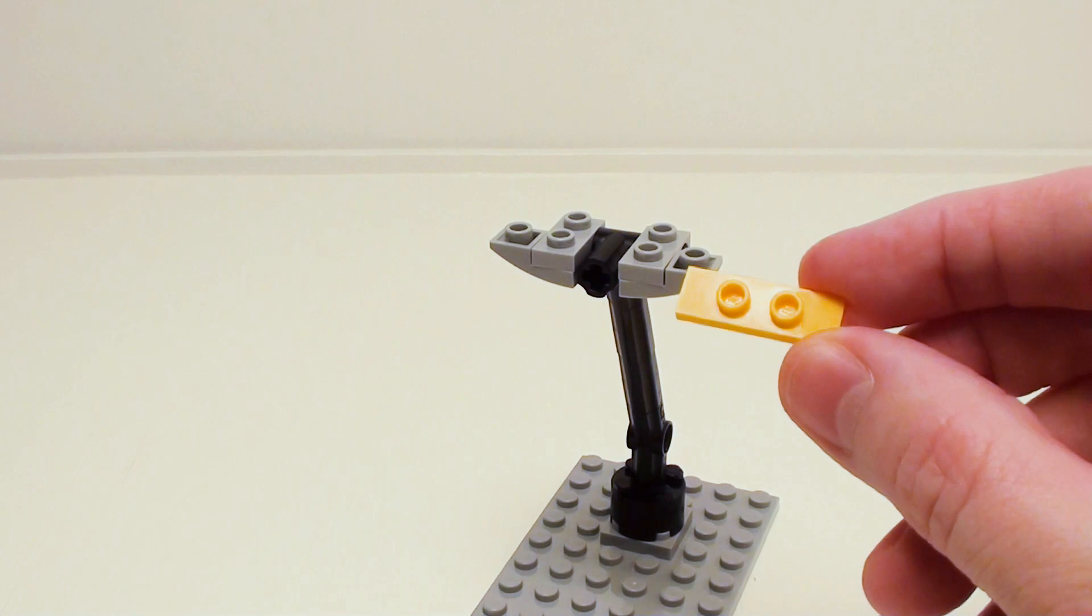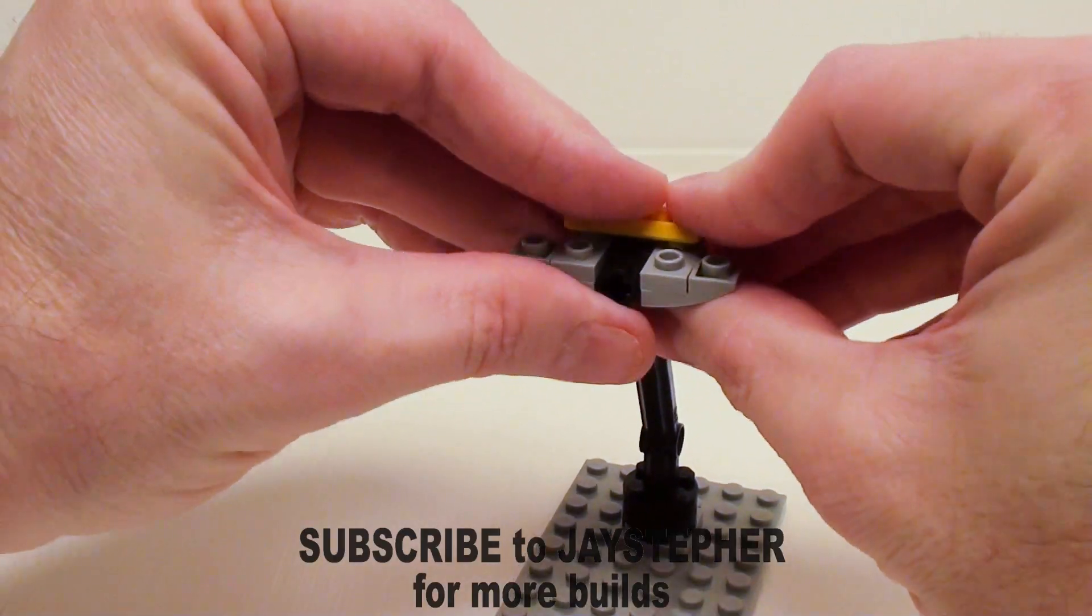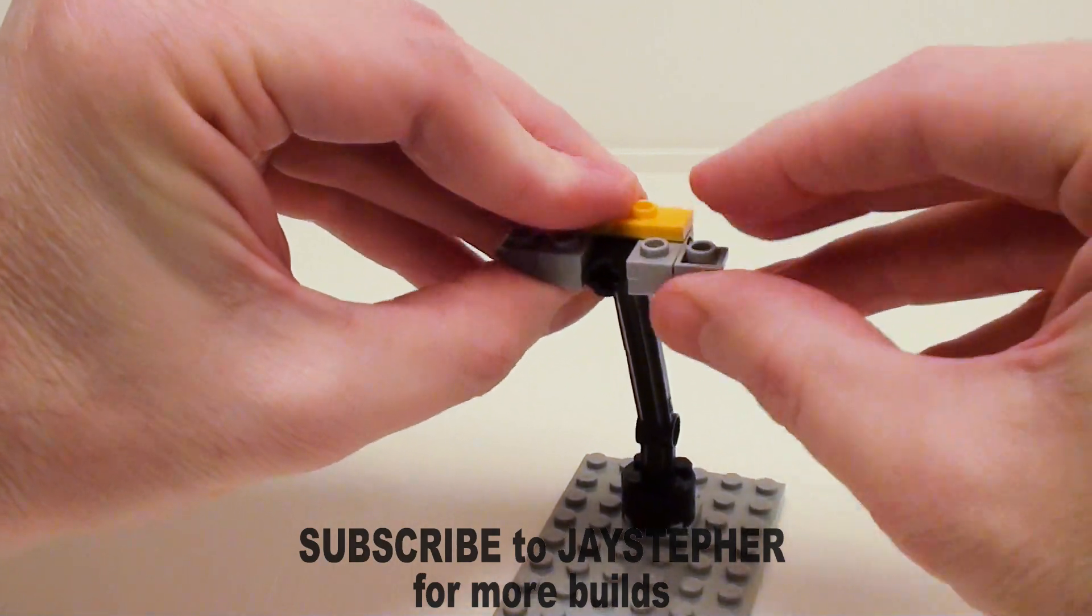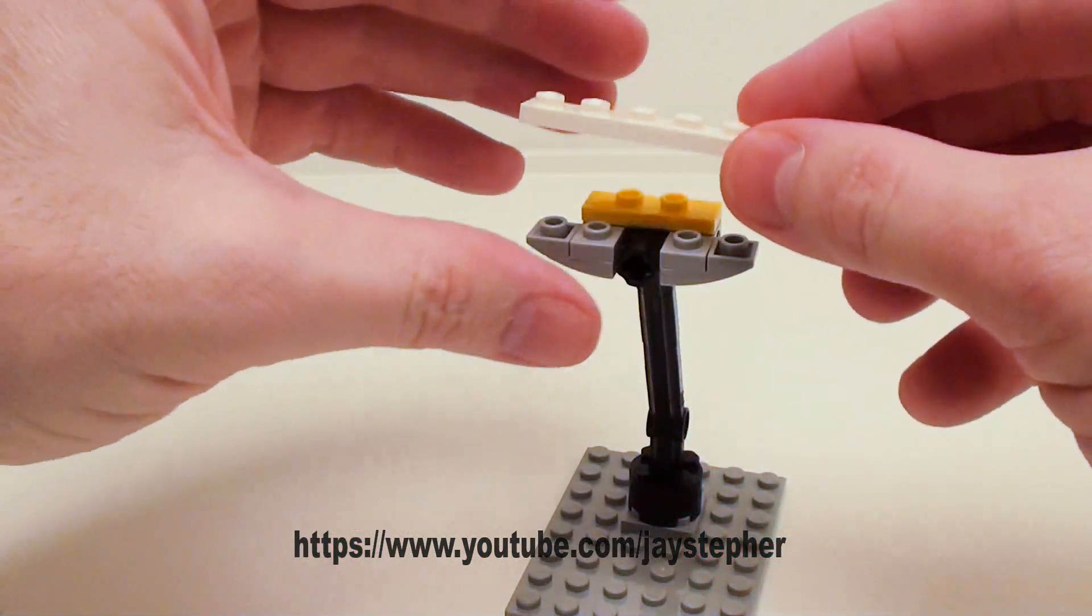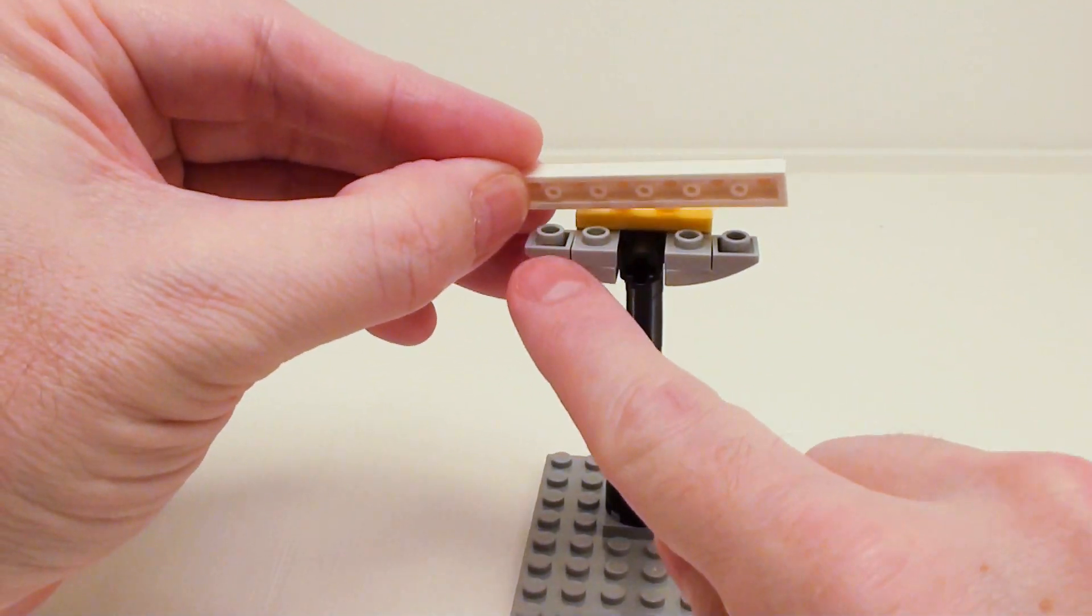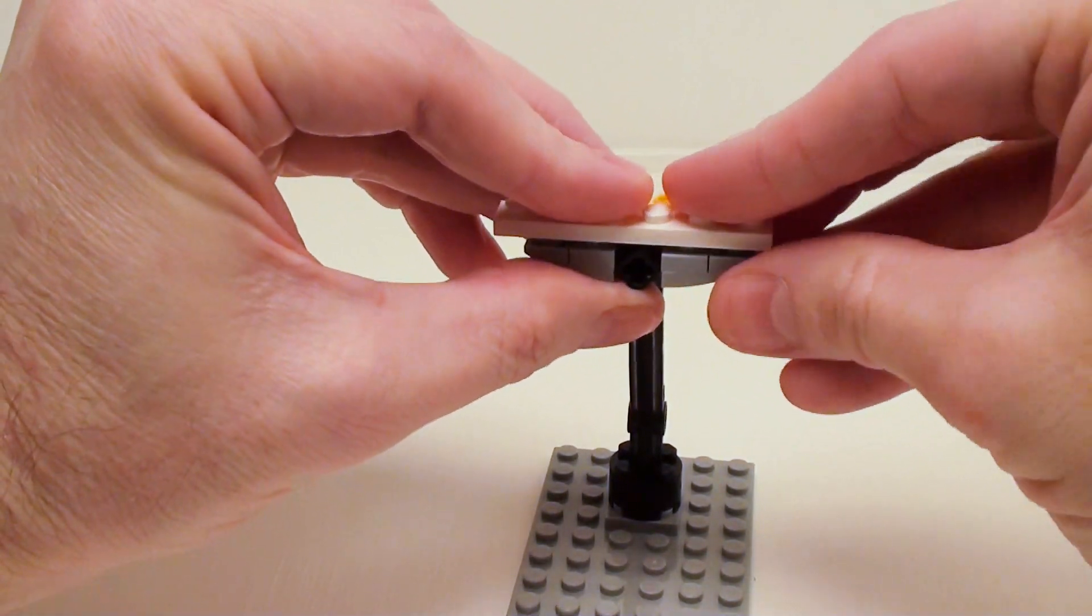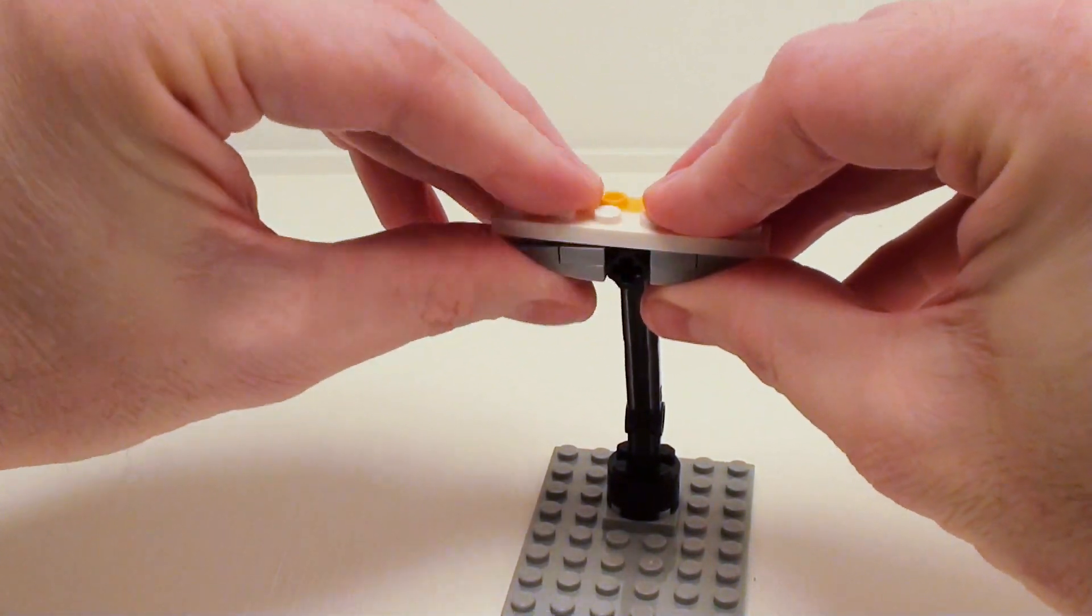Now take a 1 by 3 jumper plate. Let's place it on the back portion of our assembly. And on the front, a 1 by 6 plate. Now I want these studs to sit inside of these tubes where the plate is offset by half a stud.